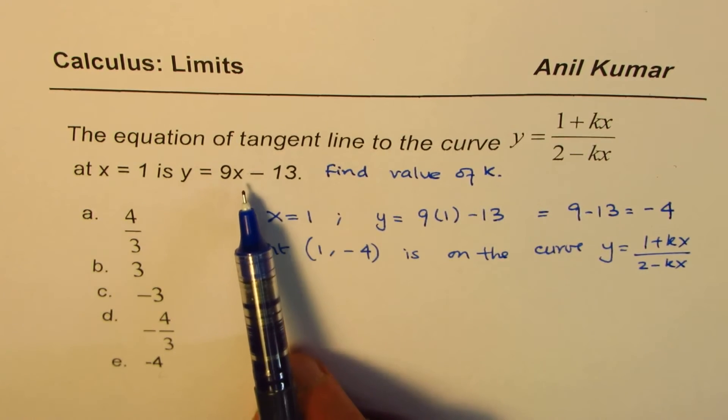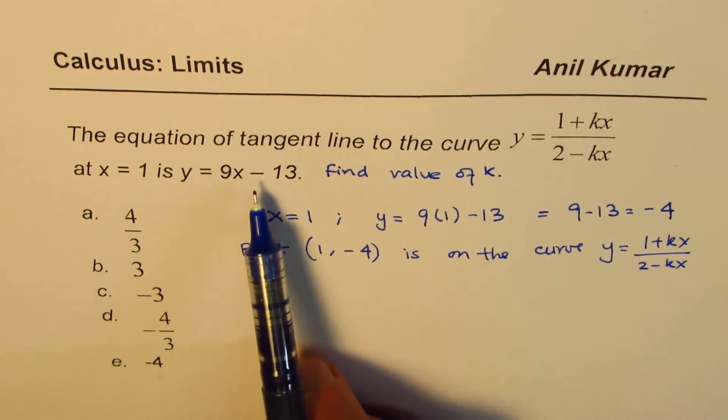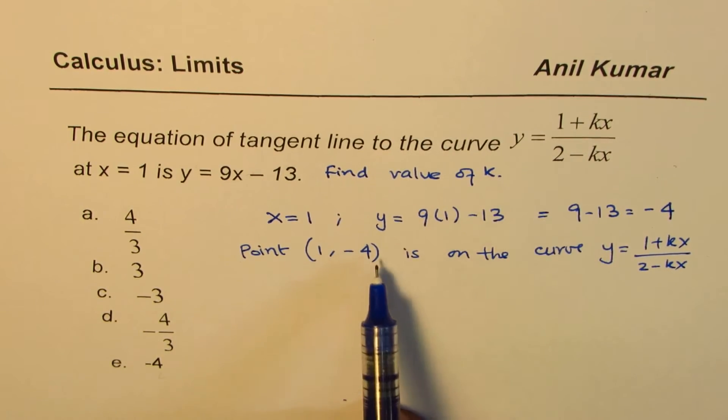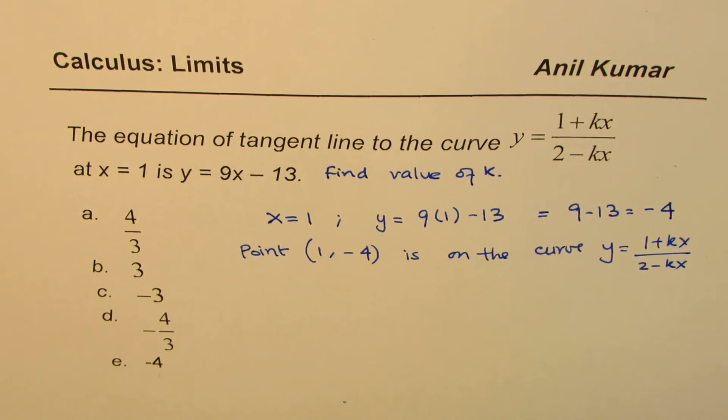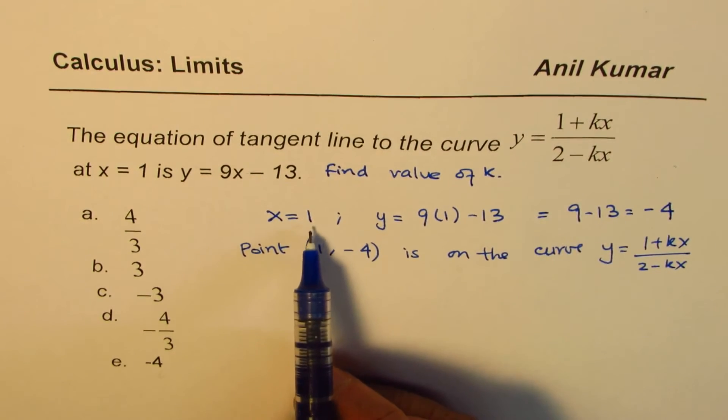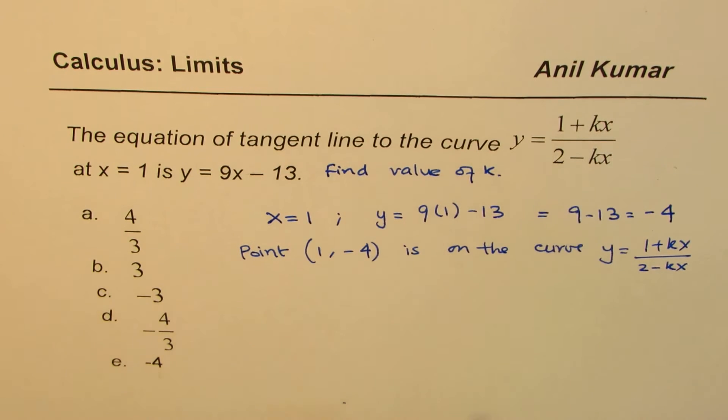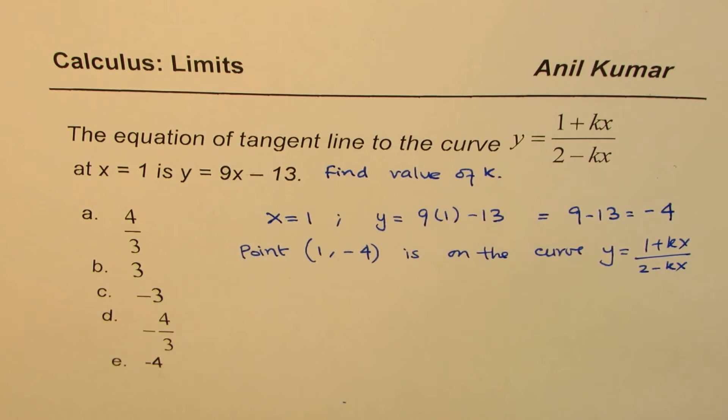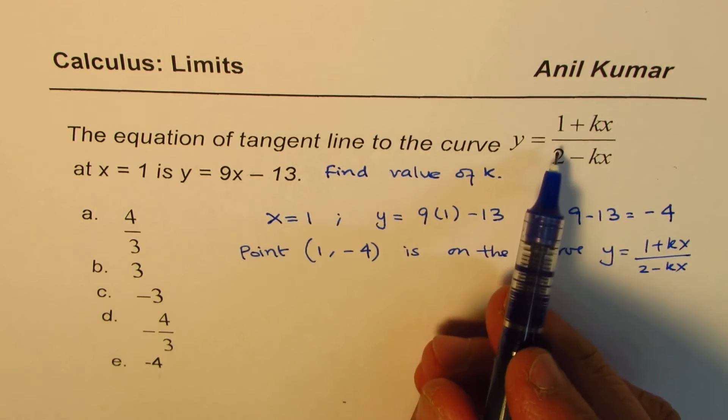This is the point on the tangent line. Since this tangent line is on that curve, this point is also on that curve. If I substitute x = 1 and y = -4 here, I should be able to find the value of k. Therefore, solve it like a linear equation. That is what we will do now.